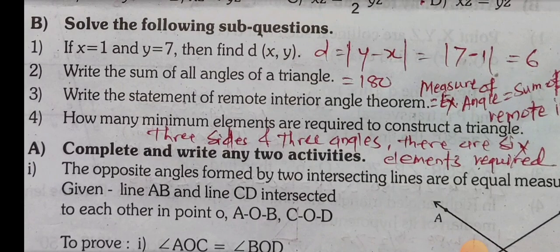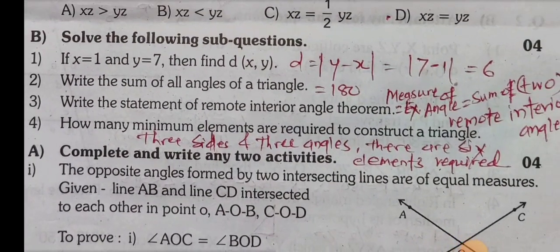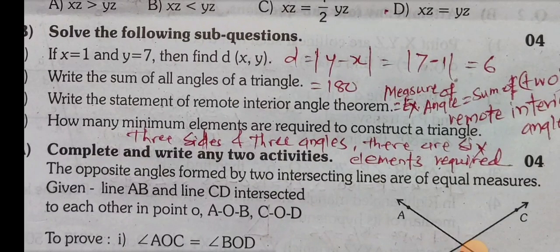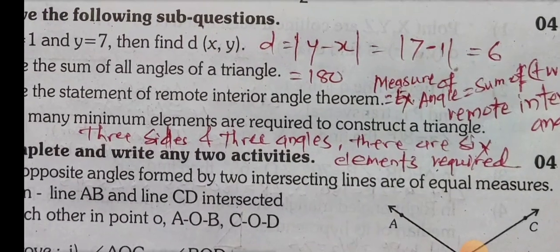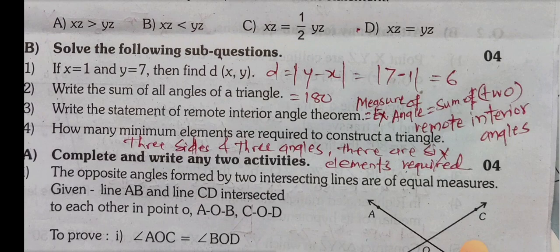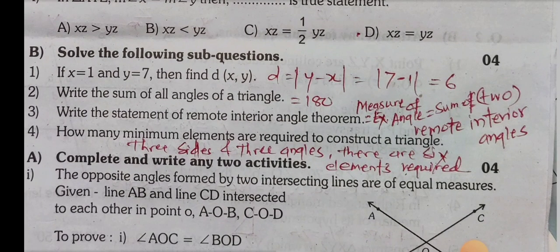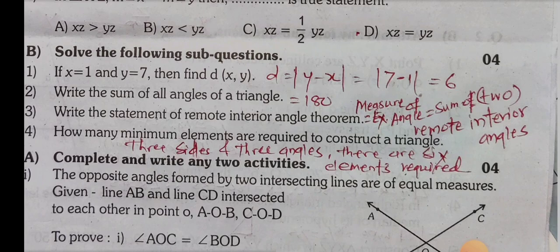Question 2: Write the sum of all angles of a triangle. Answer: 180 degrees, because the sum of all angles of a triangle equals 180. Question 3: Write the statement of the remote interior angle theorem. Statement: the measure of an external angle of a triangle equals the sum of its remote interior angles.